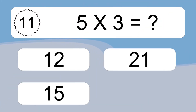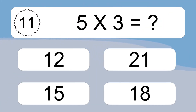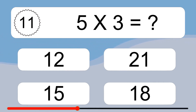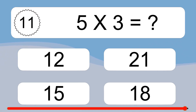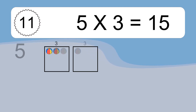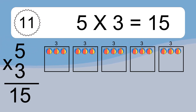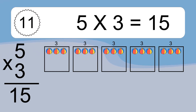5 times 3 equals what? We have 5 boxes, and each box has 3 colorful balls inside. If you count all the balls in all the boxes together, you will have 5 times 3 balls. This equals 15 balls.